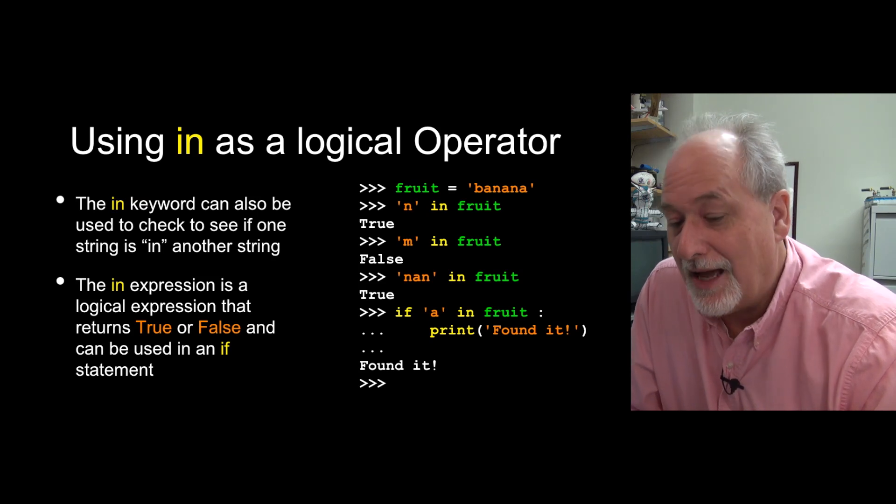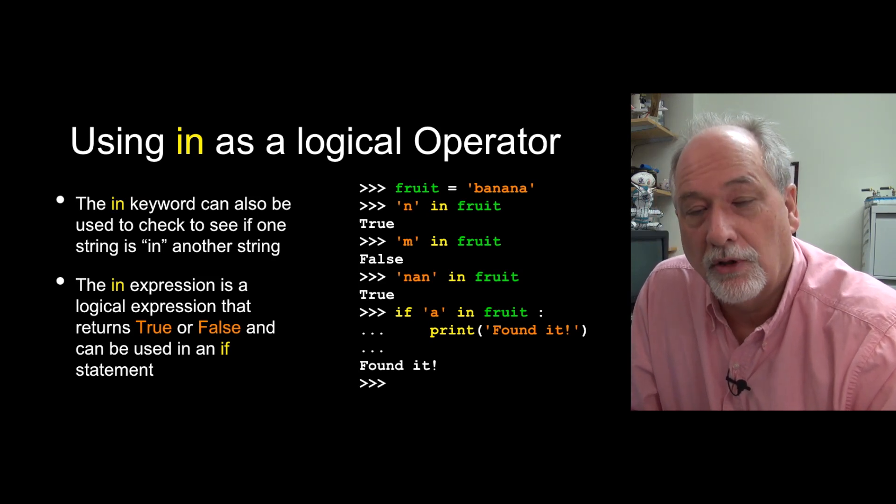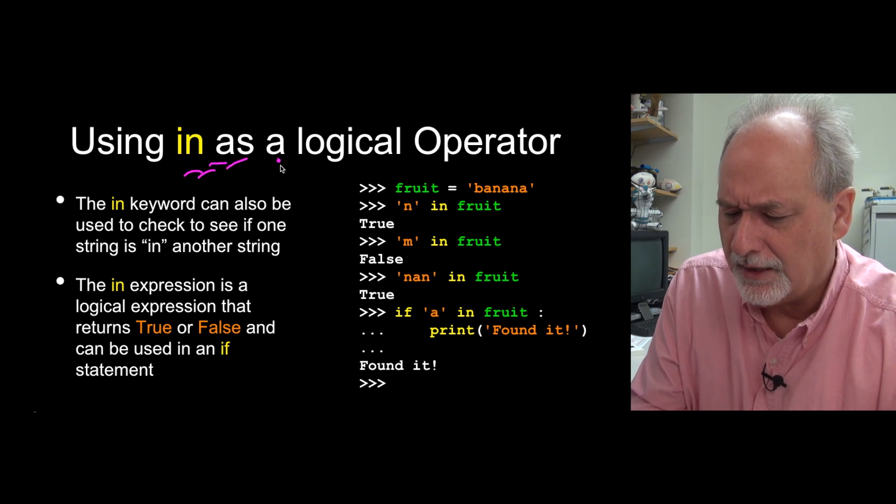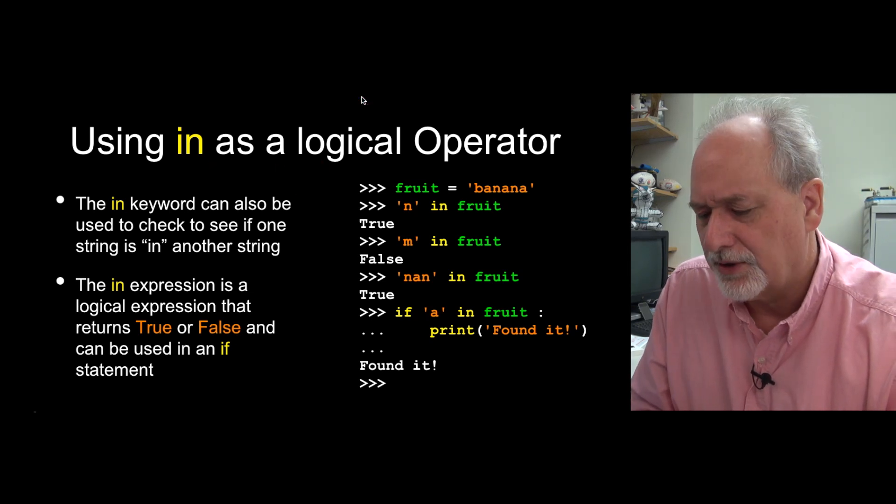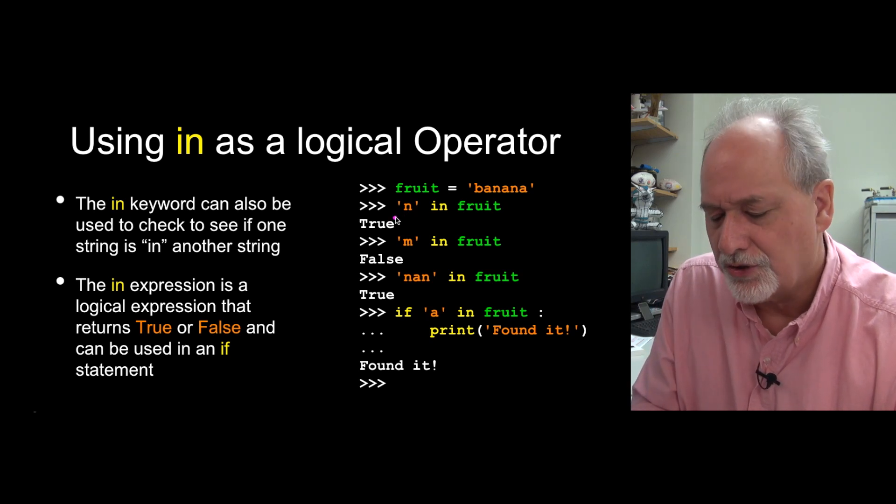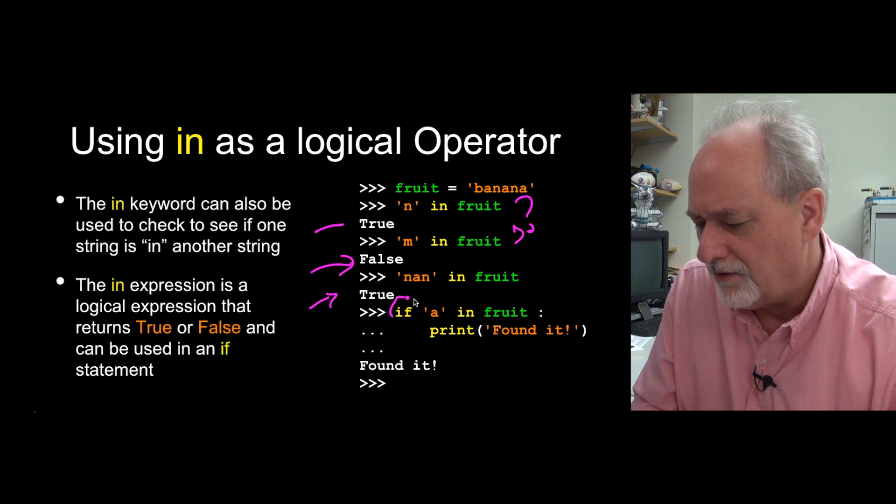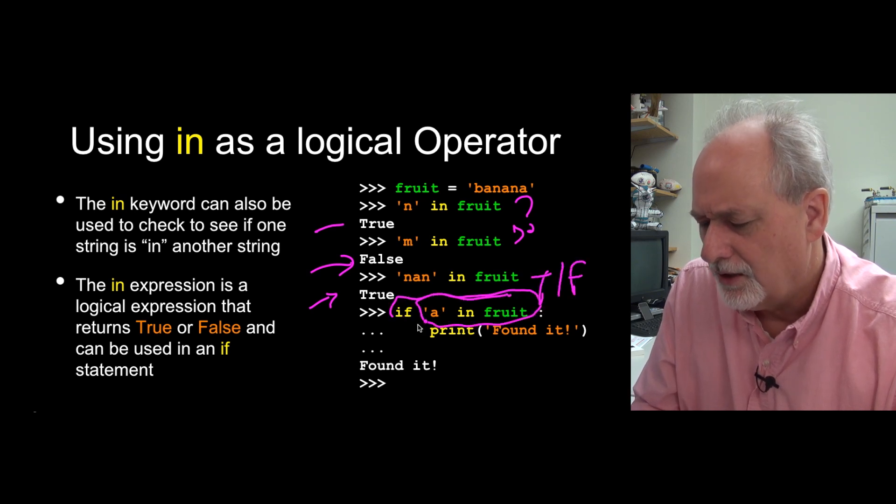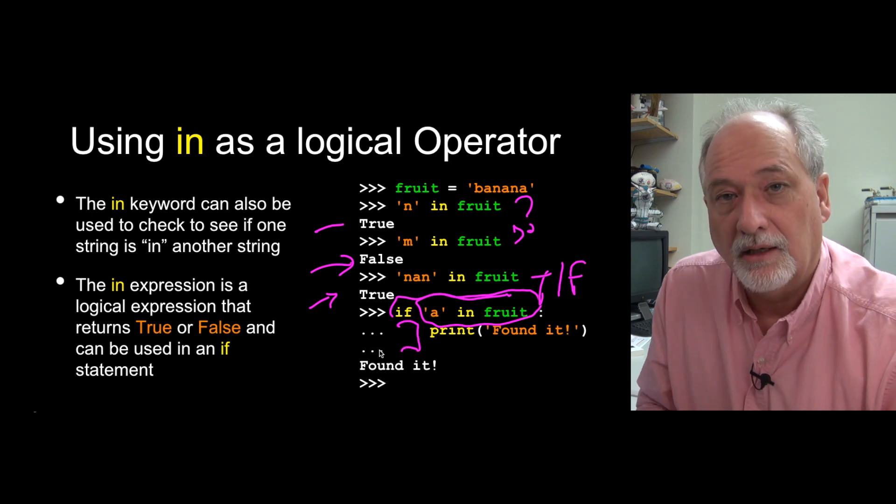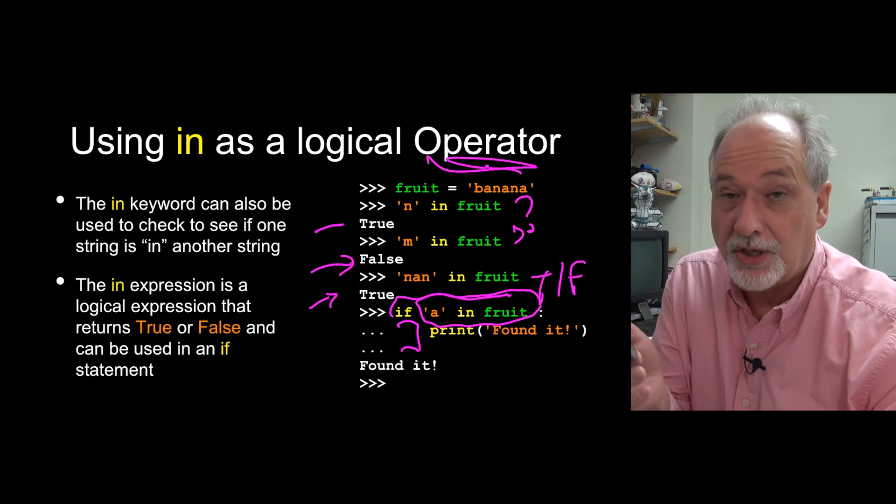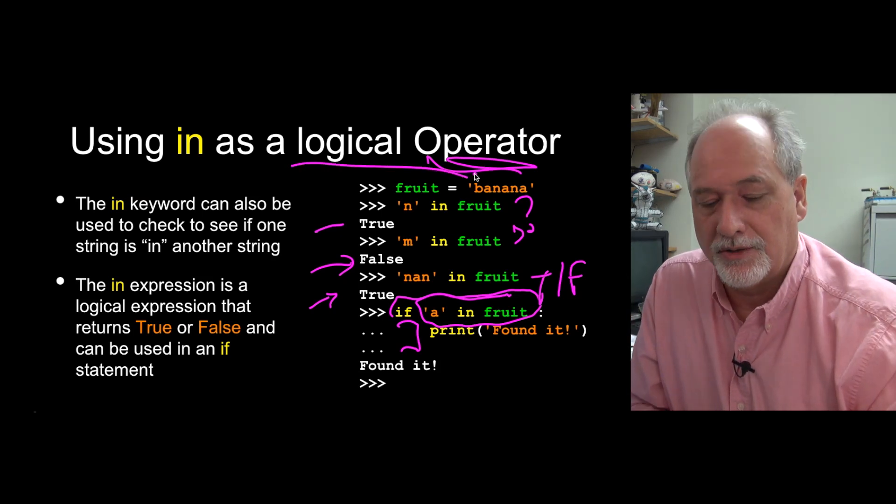We can use 'in' differently as a logical operator. We're using it as an iteration structure in for loops, but we can also use it as a logical operator in if statements. It's kind of like the double equals, or not equals, or less than or equals. It returns a true or a false. Is 'n' in fruit? The answer is true. Is 'm' in fruit? No. Is 'nan' in fruit? Doesn't have to be single character, can be more than one character, and the answer's true. You'd say if 'a' in fruit, and this is the logical value that returns true or false. We found it, so it runs the indented bit. 'in' is an operator in this particular situation.